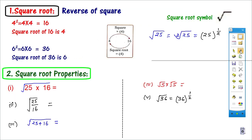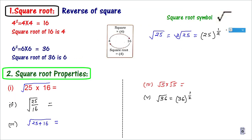What is the meaning of Square Root? I hope you have studied Squares, so let me recapitulate. 4 squared is 4 power 2, that is 4 into 4, which equals 16. Square Root is the reverse of Square. So if somebody asks me what is the Square Root of 16, the answer is 4.